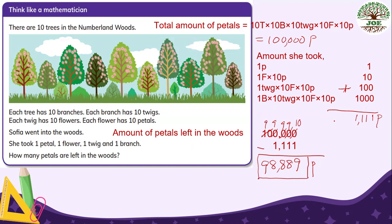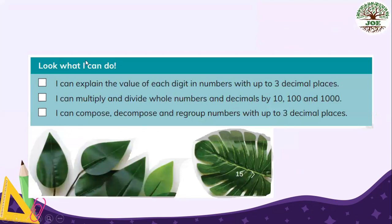This is think like a mathematician. And look what I can do from what we have learned. I can explain the value of each digit. I can explain the value of each digit in numbers with up to three decimal places. Three decimal places. I can multiply and divide whole numbers and decimals by 10, 100, and 1,000. Yes, we can. And I can compose, decompose, and regroup numbers with up to three decimal places. Yes, we can.